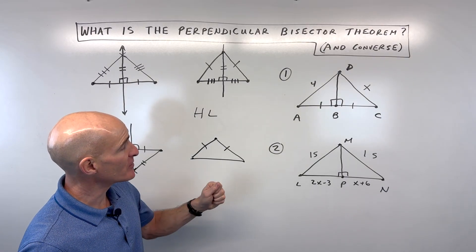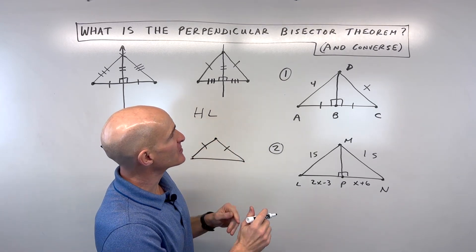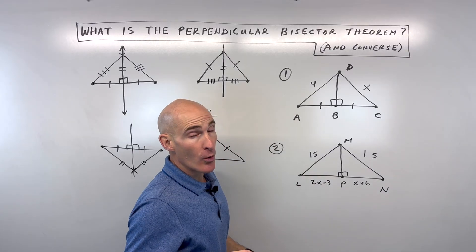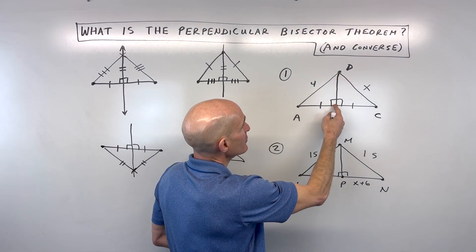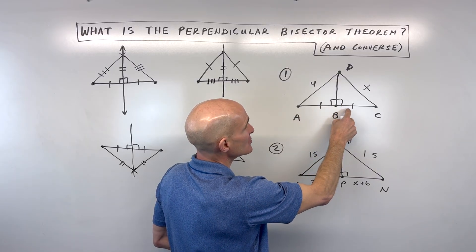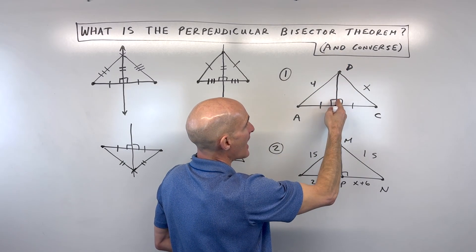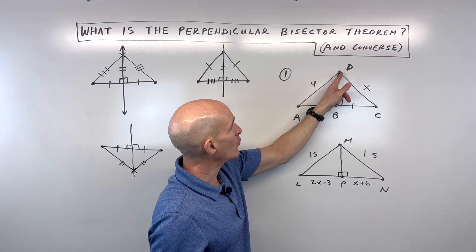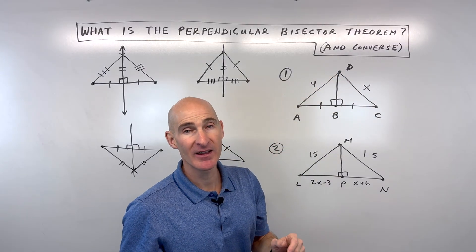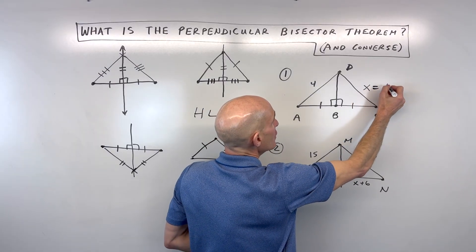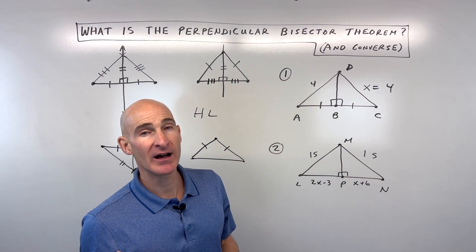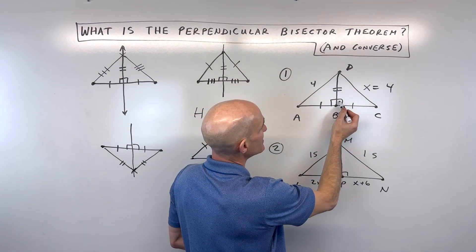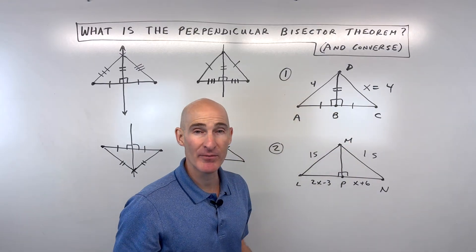Now let's apply those theorems to solve problem number one. How can we find the length of DC? We know this is perpendicular because of the right angle, and we know it's bisecting because those two segments are congruent. That means D is on the perpendicular bisector of segment AC. So the distances from D to both endpoints are the same. The shared segment is common to both triangles — side-angle-side, by CPCTC, the corresponding parts are congruent.